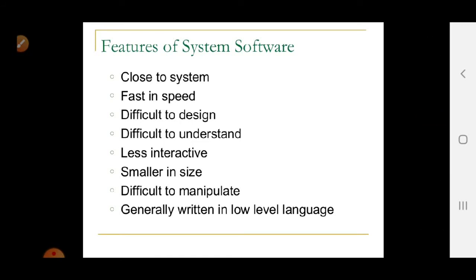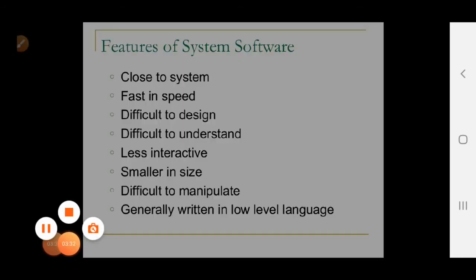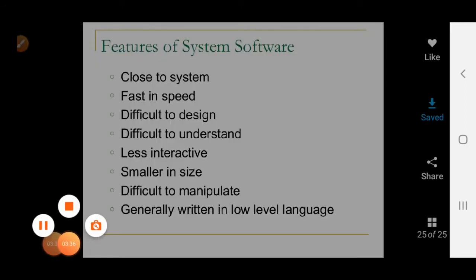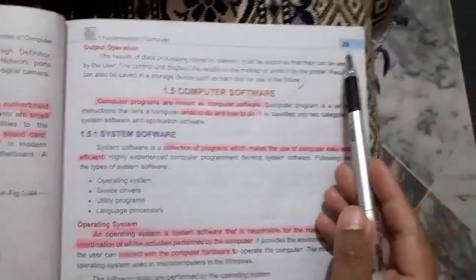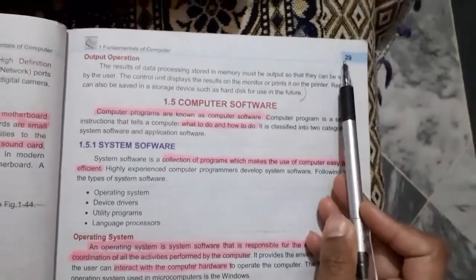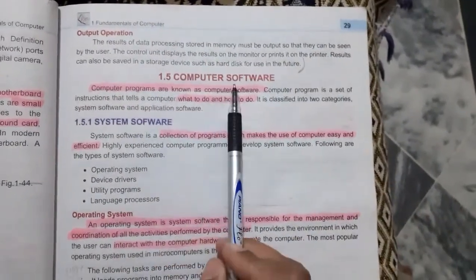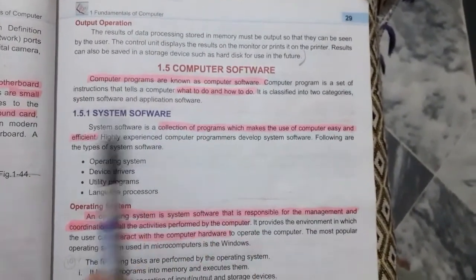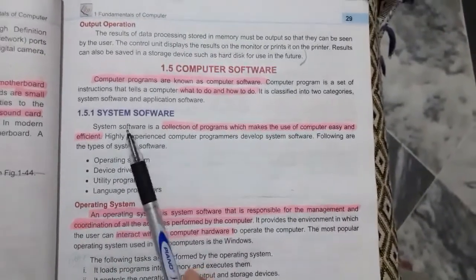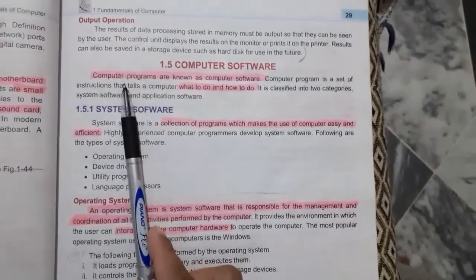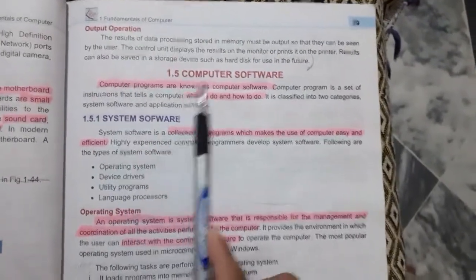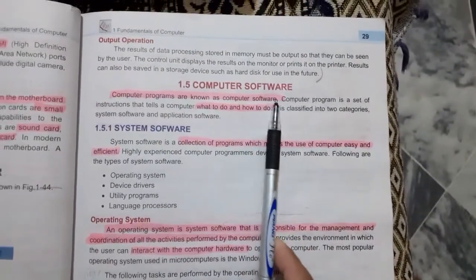Now we will also go through the book. On page 29, chapter number one, topic 1.5 — computer software. Computer programs are known as computer software and they tell the computer what to do and how to do it in the form of instructions.